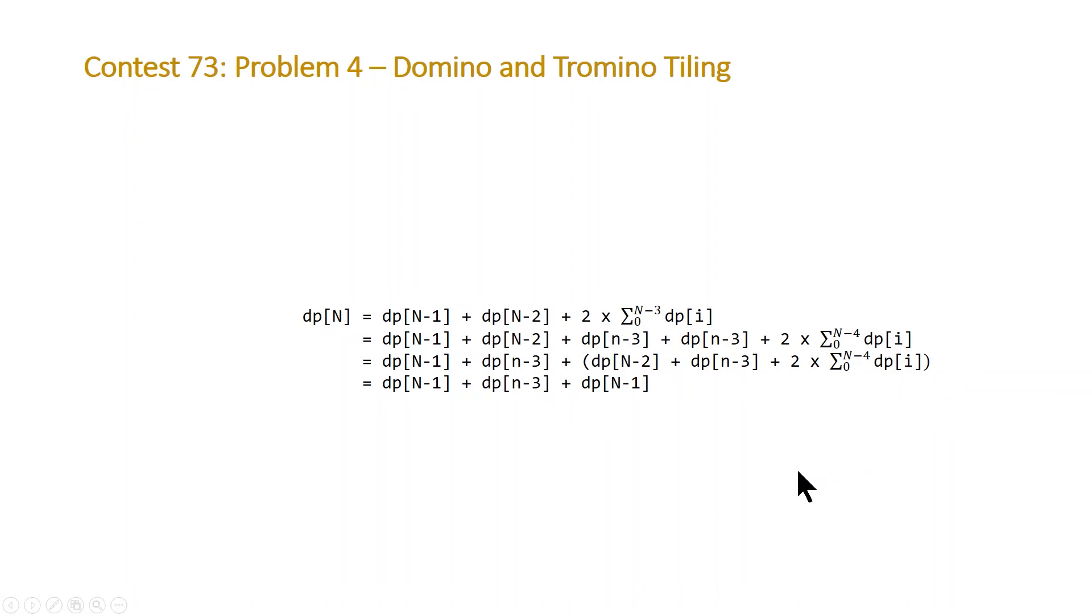And then the only thing to do is just to combine these two dp n minus 1's and we end up with the formula 2 times dp n minus 1 plus dp n minus 3. And all we have to do is implement a linear solution that calculates all of these in a vector and calculate that up to n.